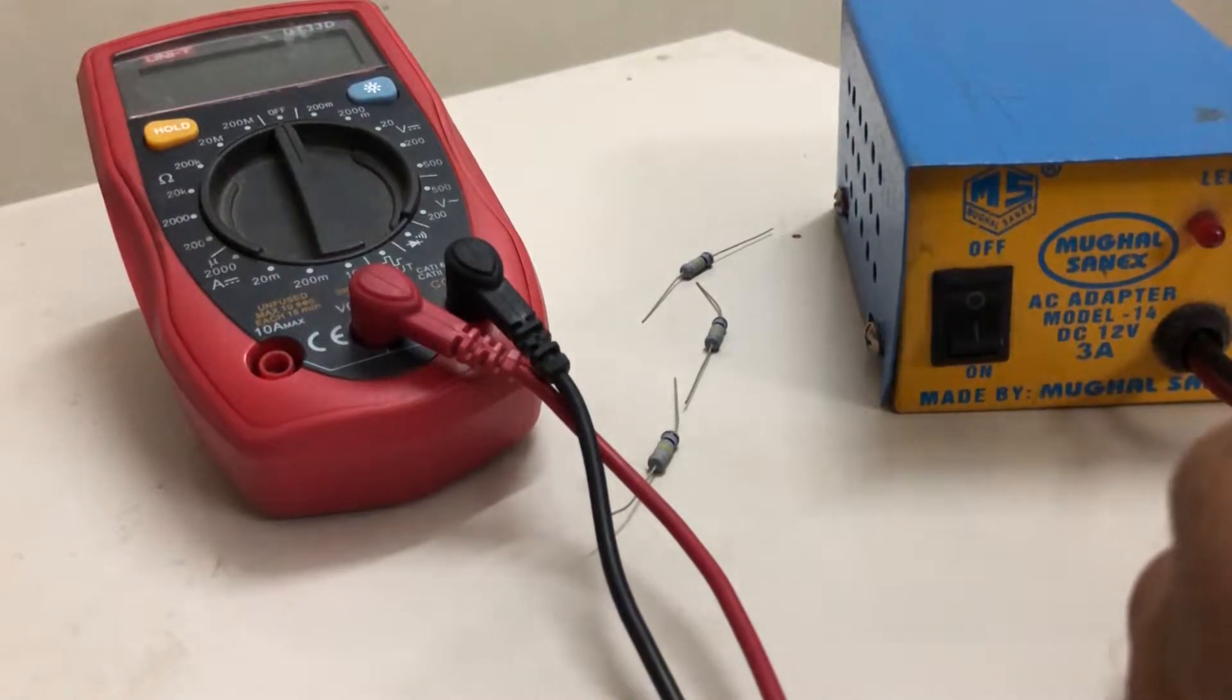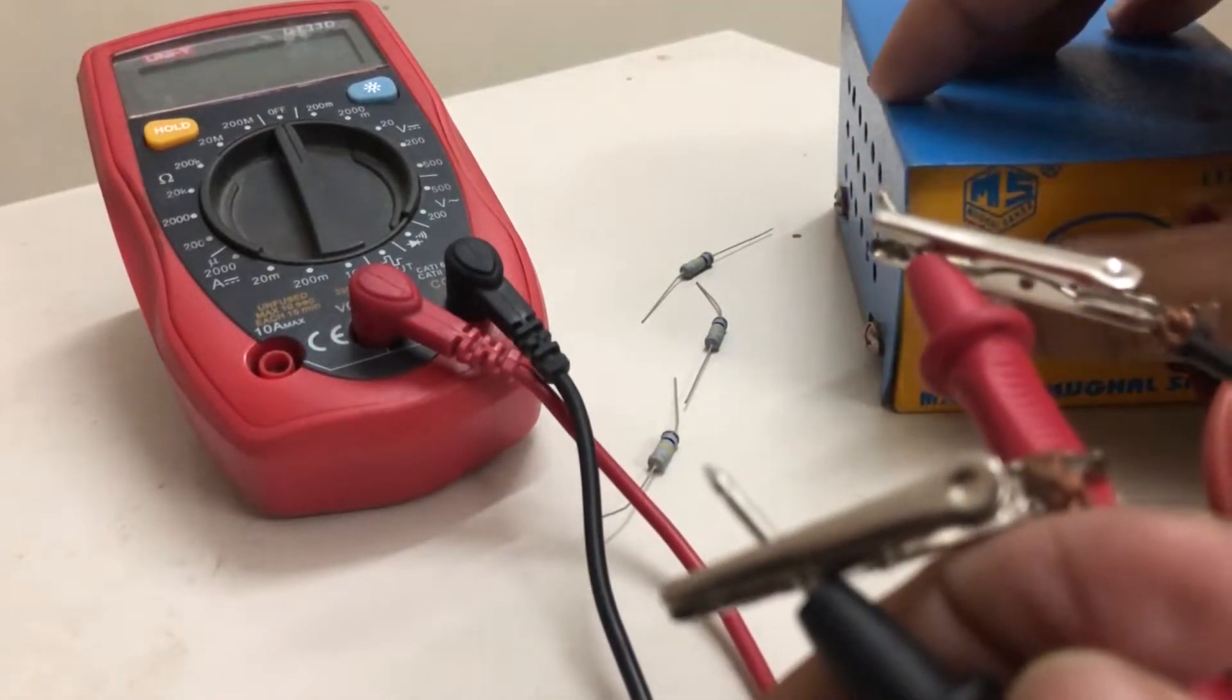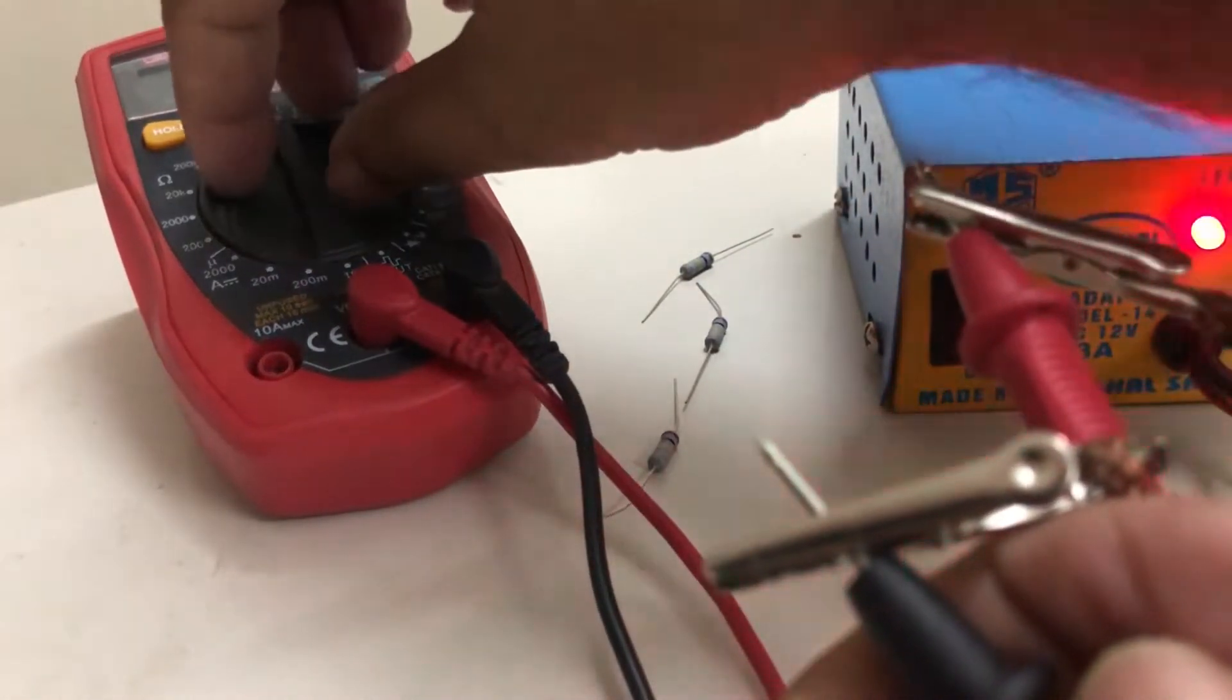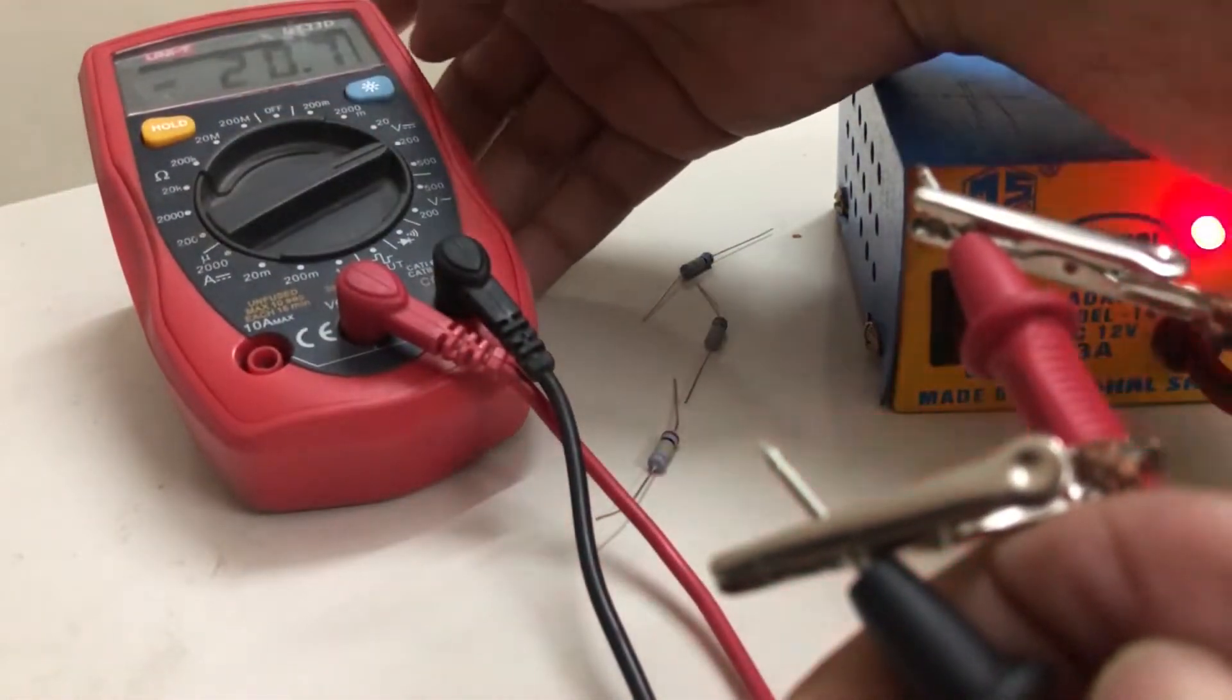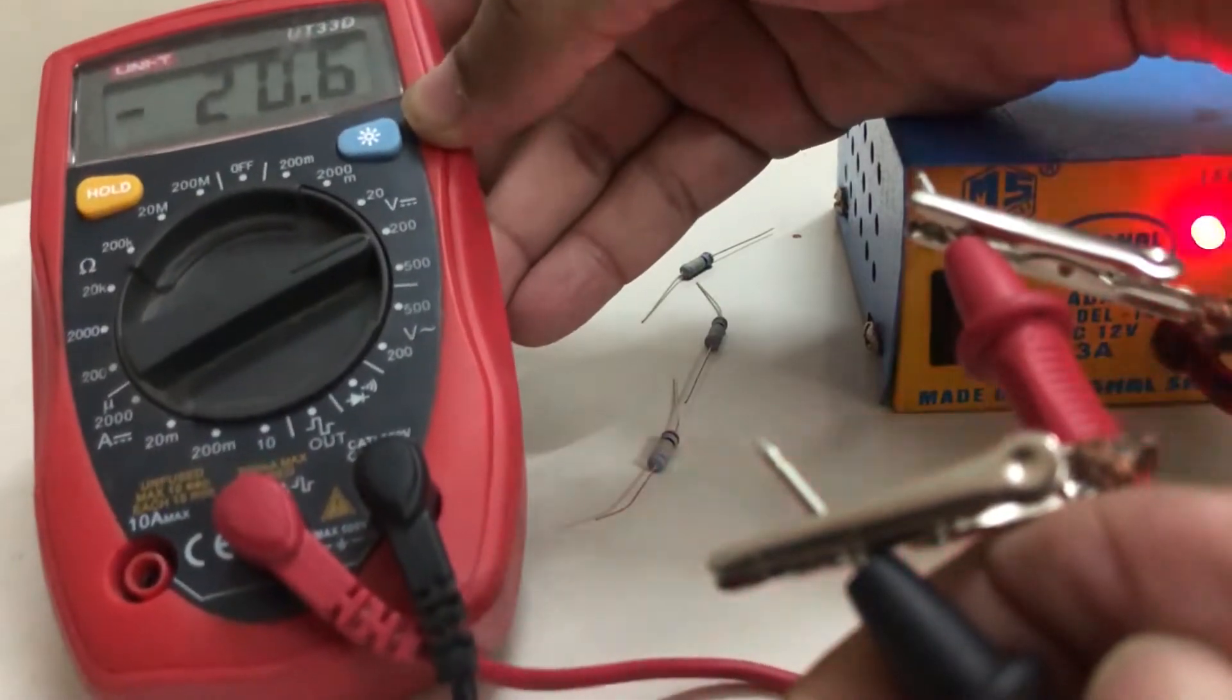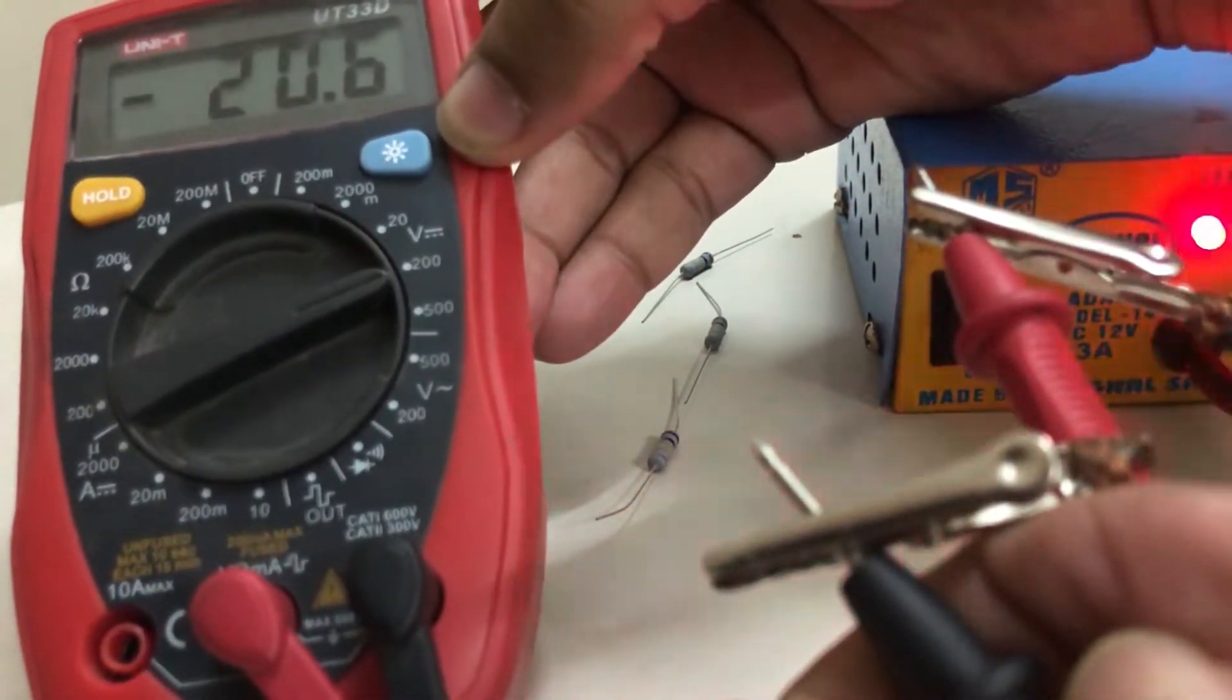Let's see the total voltage of this adapter. Connecting the pins to the terminal of the multimeter. It is showing 20V. Let's drop it down to 12 to 13V.